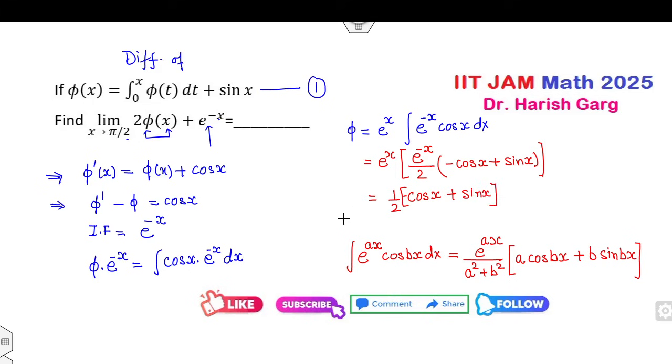And if you can see, φ(x) has come. Now substitute here. You need to find limit x approaches π/2, so limit x approaches π/2. Twice will cancel, so that will be -cos x + sin x + e raised to power minus x.